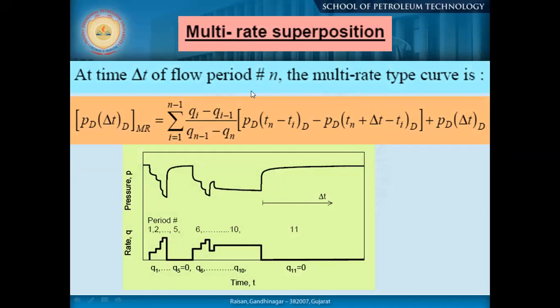For multi-rate superposition: we produce at rate q for some time, then produce at certain other rates. When using the Horner plot, you need to add up all the production time and production rate parameters. It may involve a multi-rate superposition of both production rate and time. The last buildup test requires accounting for everything; otherwise the analysis may not be accurate. That's why we need to do the multi-rate superposition.